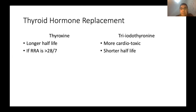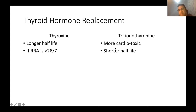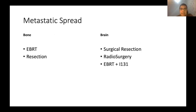For thyroid hormone replacement, practice has changed. Previously we gave T3 for four weeks, stopped two weeks before radioactive iodine ablation, but patients often became symptomatic with hypothyroidism. Now we give thyroxine (longer half-life) and administer recombinant TSH (thyrogen) to stimulate hormone levels at the time of ablation.